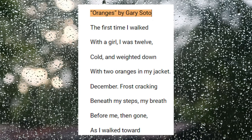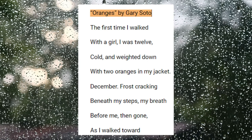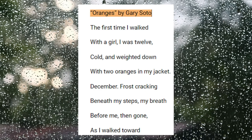This next poem is a little bit longer, and it's "Oranges" by Gary Soto. The first time I walked with a girl, I was 12. Cold and weighted down with two oranges in my jacket. December. Frost cracking beneath my steps. My breath before me, then gone.